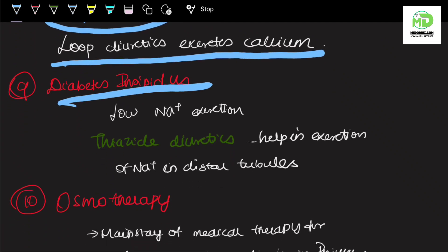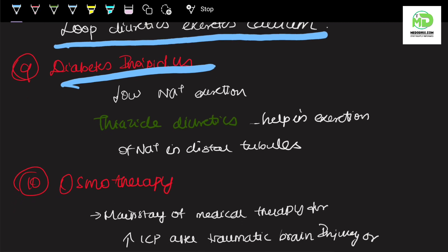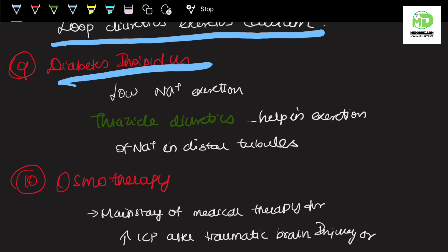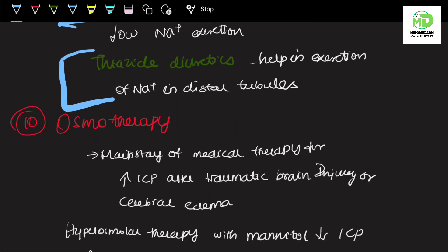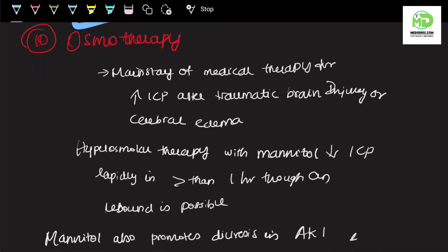The ninth condition is diabetes insipidus. In diabetes insipidus, there is urine production but sodium will not be excreted. There is low sodium excretion. In such cases, we use thiazide diuretic which will help in excretion of sodium in distal tubules.